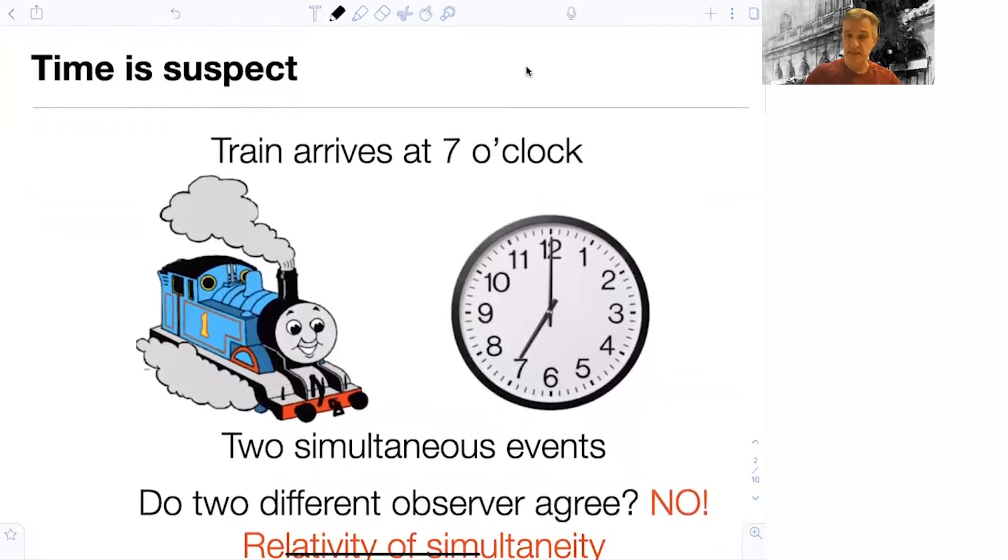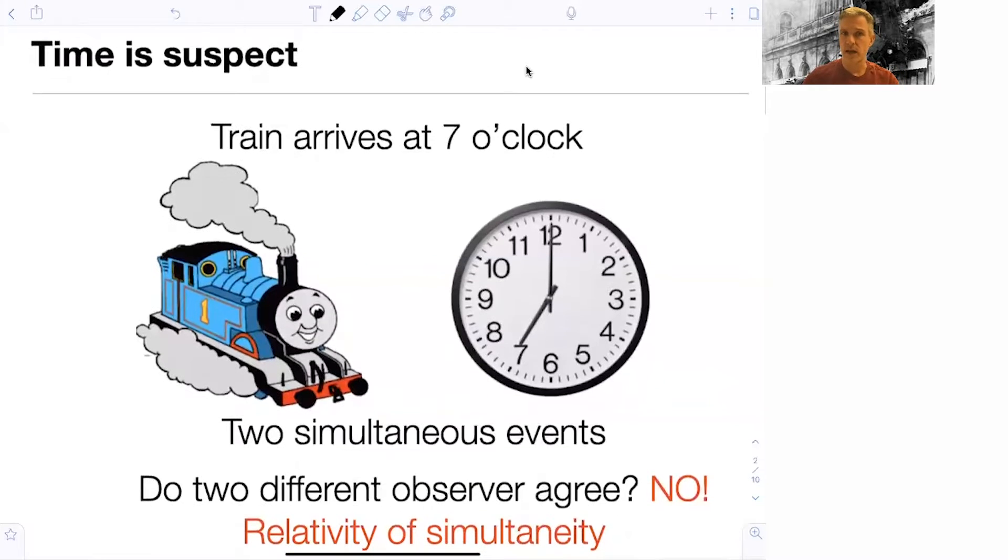So time is suspect. I alluded to this already when we looked at Galilean transformation, where we simply, out of our intuition, assumed that time is invariant. Now, when we now talk about time, the viewpoint I would like you to have is that we want to look at clocks from different reference frames. We want to investigate whether or not events happened simultaneously or not.